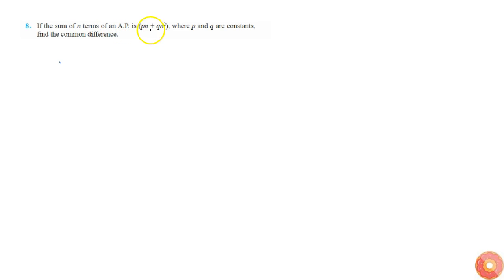Given that sum of n terms in AP is pn plus qn square, we know that sum of n terms is given by n by 2 times a plus n minus 1 into d. Now this is given by pn plus qn square. We can equate the coefficients of n and n square and we'll get the values of a and d.